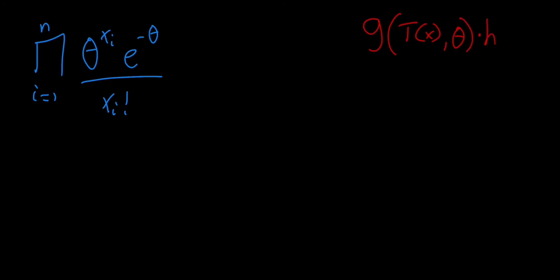times a function h, which is just a function of our data. And so if we can factor it in this way, then we know that this function here, t, is going to be a sufficient statistic for our parameter theta.